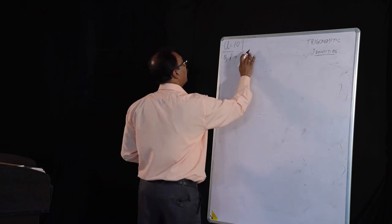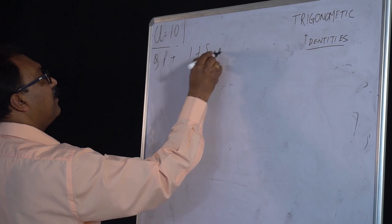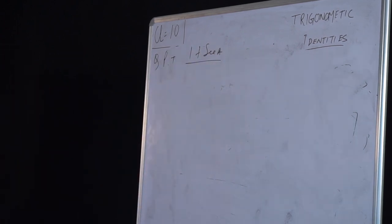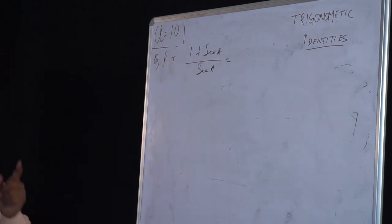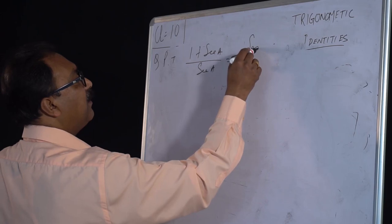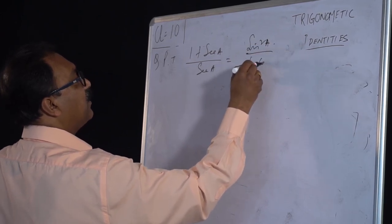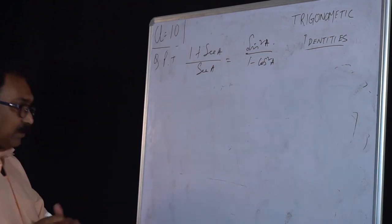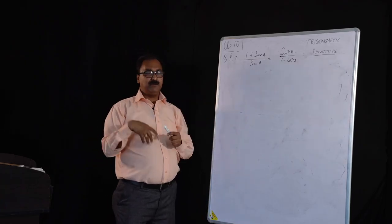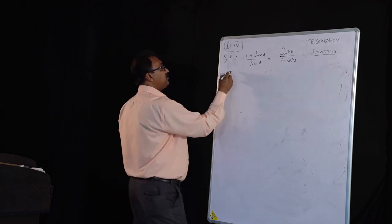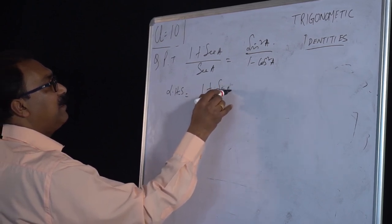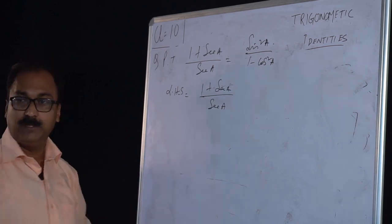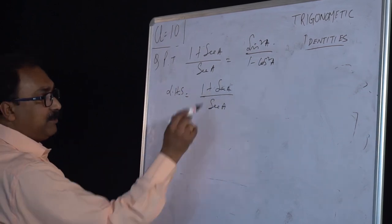One more question: prove that (1 plus sec A) by sec A equals sin square A divided by (1 minus cos A). If you start with left hand side — (1 plus sec A) by sec A — change sec to 1 by cos A. Taking LCM as cos A: numerator is cos A plus 1, divided by 1 by cos A. Cancelling gives 1 plus cos A.